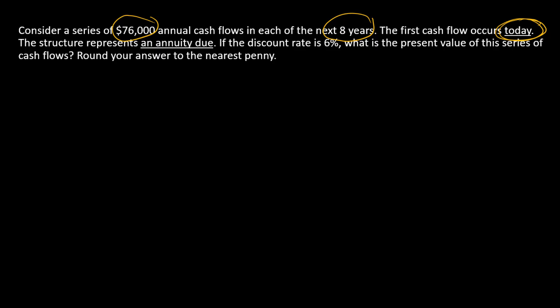We have a name for this structure - it's called an annuity due. An annuity due is just an annuity with the first payment occurring today.